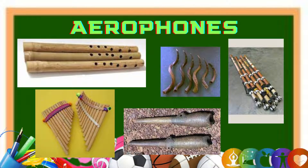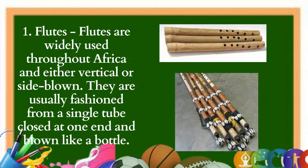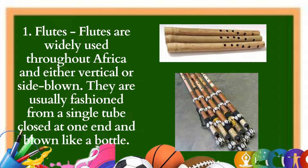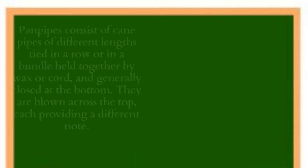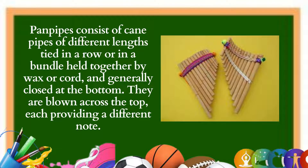E: Aerophones. Aerophones are instruments produced initially by trapped vibrating air columns or which enclose a body of vibrating air. Flutes in various sizes and shapes, horns, pan pipes, whistles, gourd and shell megaphones, oboe, clarinet, animal horn, and wooden trumpets fall under this category. 1. Flutes: Flutes are widely used throughout Africa, either vertical or side blown, usually fashioned from a single tube closed at one end and blown like a bottle. Pan pipes consist of cane pipes of different lengths tied in a row, closed at the bottom, and blown across the top, each providing a different note.